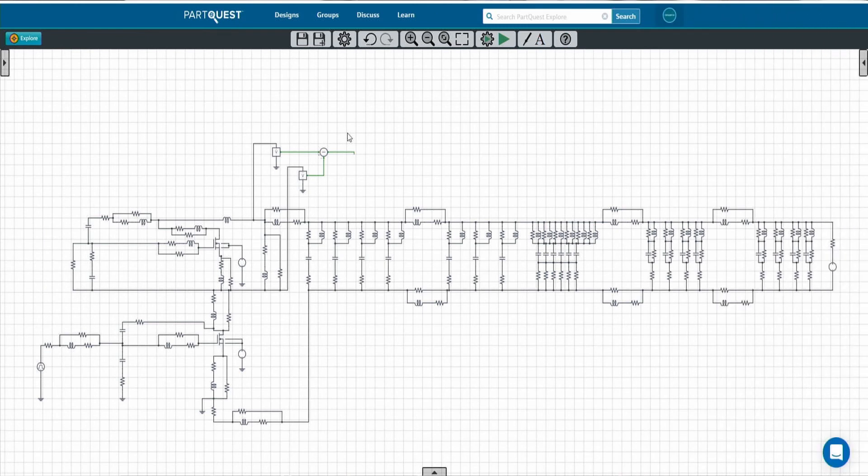We will now replicate the double pulse measurement in a simulation environment. We are using PartQuest Explorer, which is a cloud-based simulation tool developed by Siemens. Here in this schematic you can recognize the half bridge configuration, the low side MOSFET and the high side MOSFET, the gate signal, the inductive load of 4 microhenry, and the resistance to sense the current.